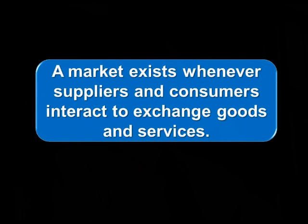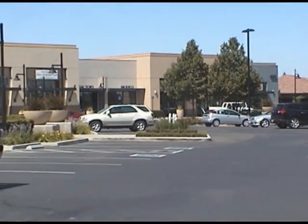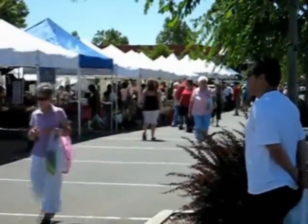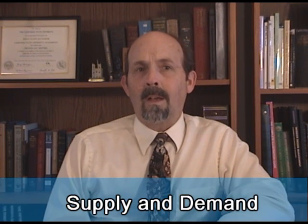The single most important proposition in economic theory is that competitive markets do a good job of allocating resources. A market exists whenever suppliers and consumers interact to exchange goods and services — wherever suppliers offer something to buyers who have something to offer in return. Thus a market can take many forms, from brick and mortar stores, to sidewalk peddlers, to virtual markets on the internet. No matter what the form, they all operate under the principle of supply and demand.